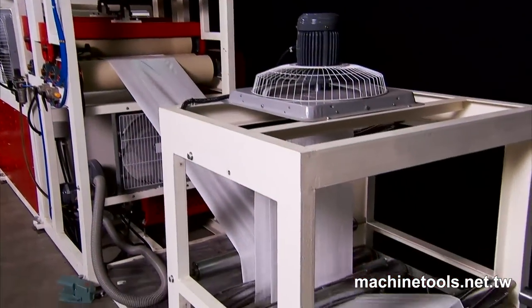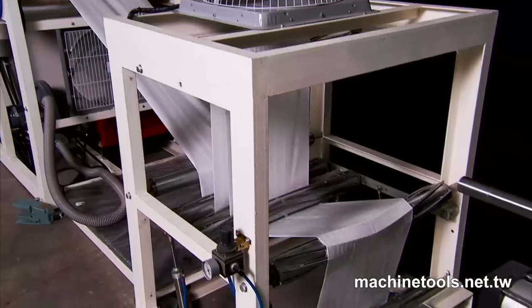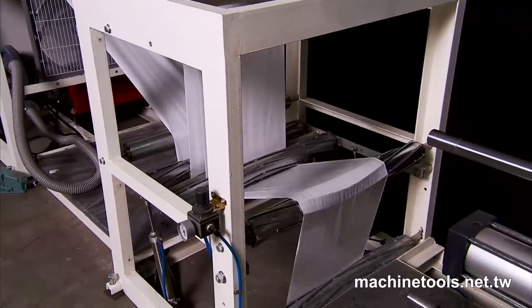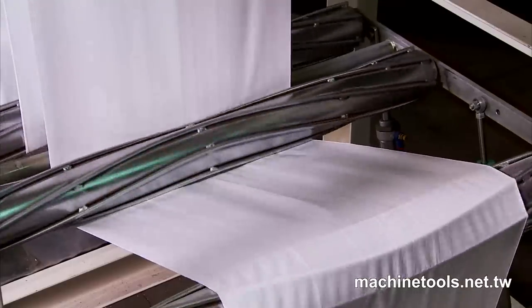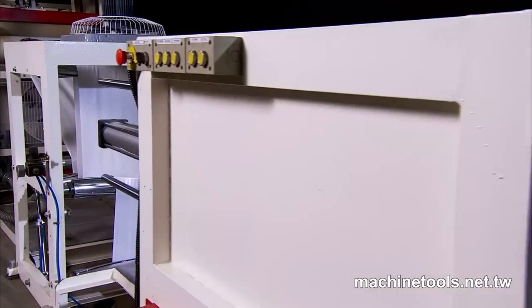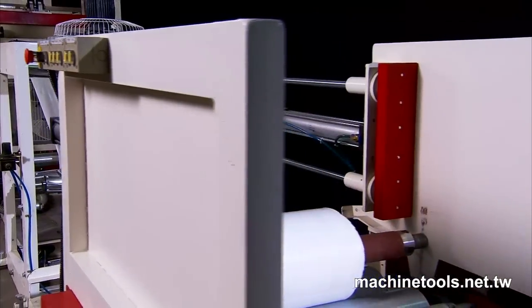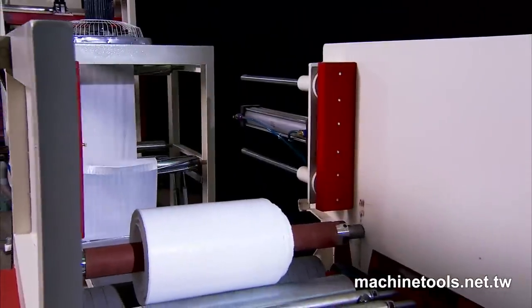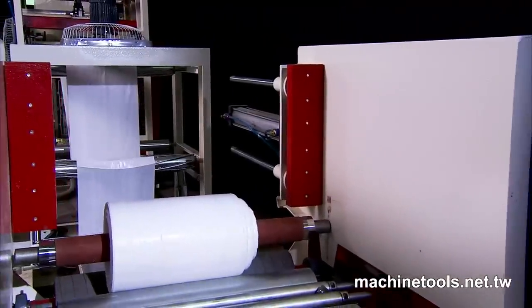The rewinder has two key features: firstly the automatic tension control system which ensures a perfect even wind for easy cutting, and also the automatic roll change device which ensures a smooth uninterrupted production flow.